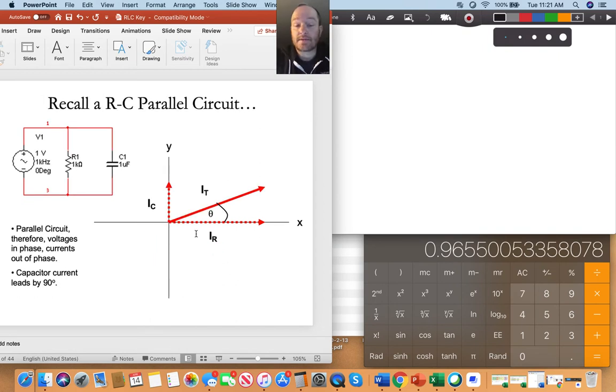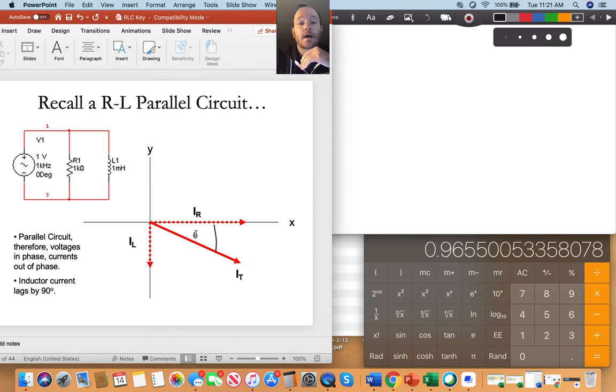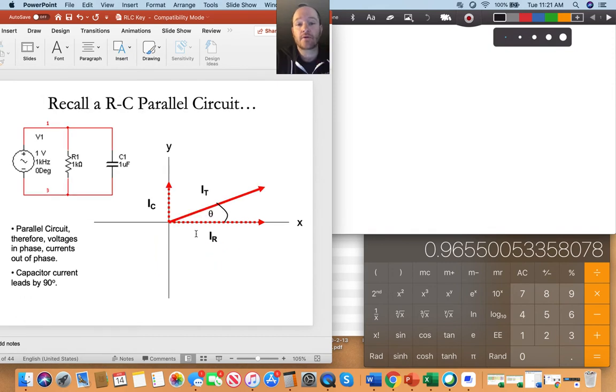Now, if you recall, this was a while ago, an RC parallel circuit. What we have here is our phase angle is in the positive, meaning that our current is leading our voltage. And again, as you guys recall, for both of these, if it's more resistive, it's between zero and negative 45. If it's more inductive for this one, we are between negative 45 and 90.